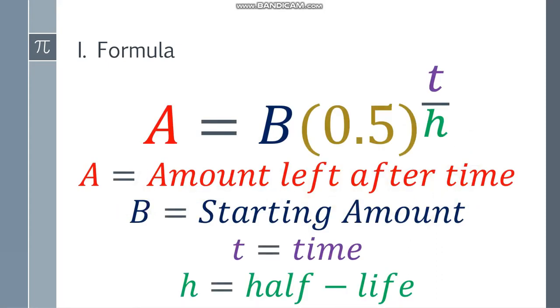So what are the variables of that? Again, the A will be the amount left after time. So this is the resulting amount. B will be the starting amount. T will be time, and H will be the half-life.